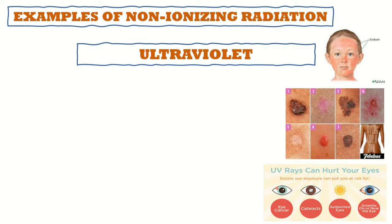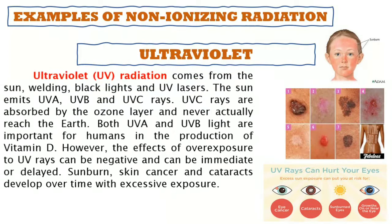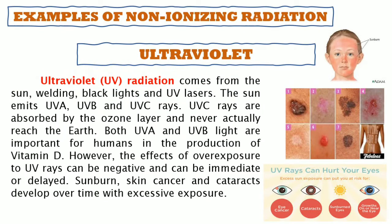For Lesson One we focus on non-ionizing radiation. Ultraviolet radiation comes from the sun, welding, black lights, and UV lasers. The sun emits UVA, UVB, and UVC rays. UVC rays are absorbed by the ozone layer and never reach the Earth. Both UVA and UVB light are important for humans in the production of vitamin D. However, the effects of overexposure to ultraviolet rays can be negative — sunburn, skin cancer, and cataracts develop over time with excessive exposure.